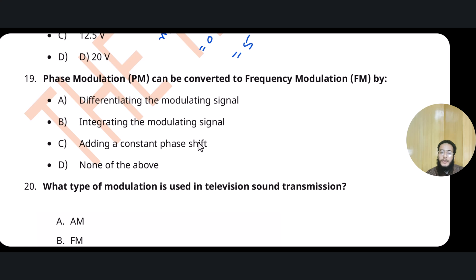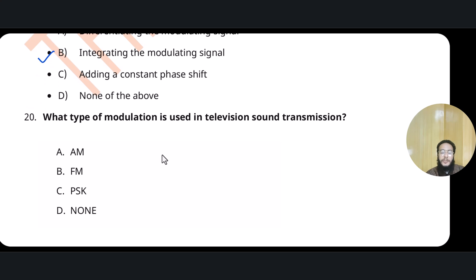Phase modulation can be converted into frequency modulation by integrating it, because phase modulation is actually the time derivative of frequency modulation. FM is used in television sound transfer because FM has low noise, giving better quality audio.